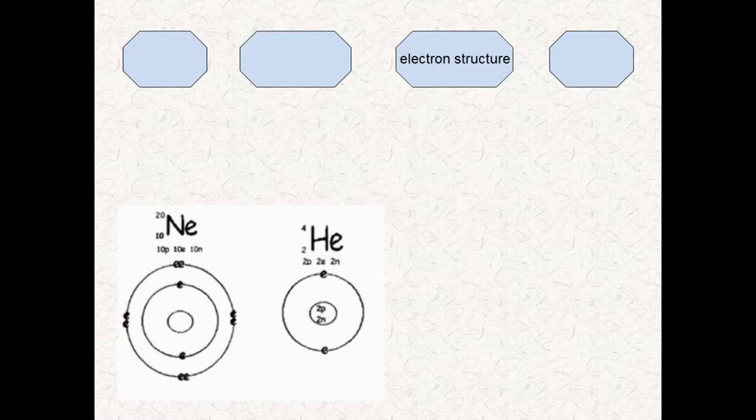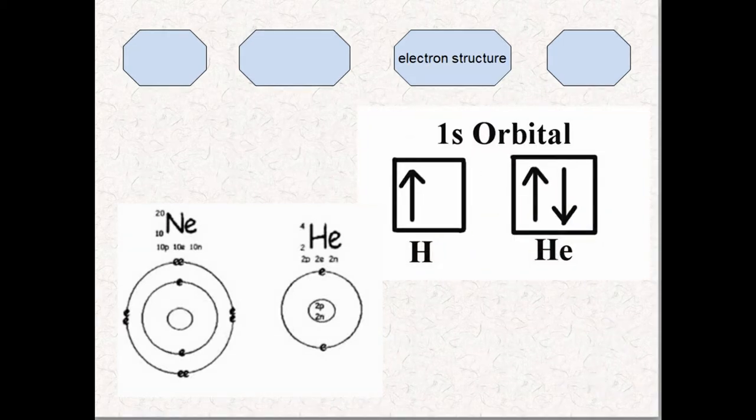All other noble gases have eight outer electrons, except for helium. It has only two. Since helium only has an s orbital and is occupied, it can't have any more electrons. So that is why it won't react like other noble gases.